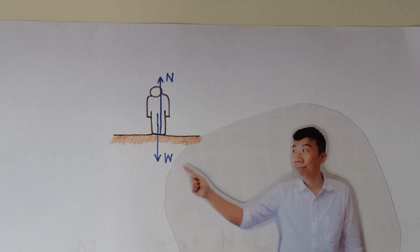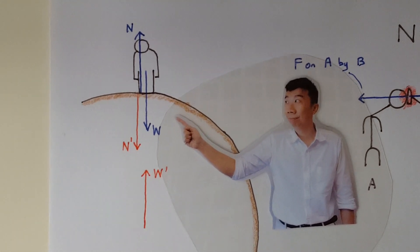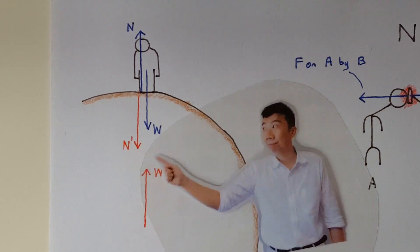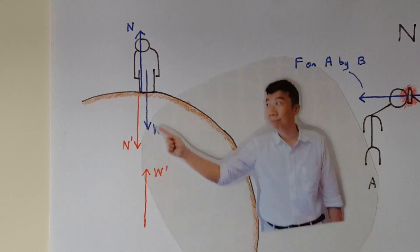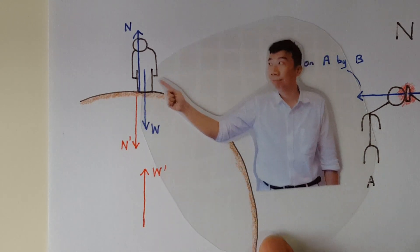Whereas a true action-reaction pair are always equal but opposite no matter what. That's because an action-reaction pair is the mutual exchange of forces between two bodies. For example, these two is the mutual gravitational pull between the Earth's mass and your mass.